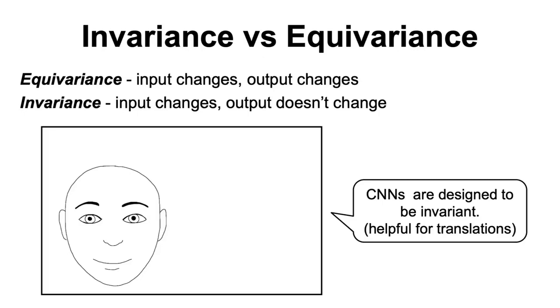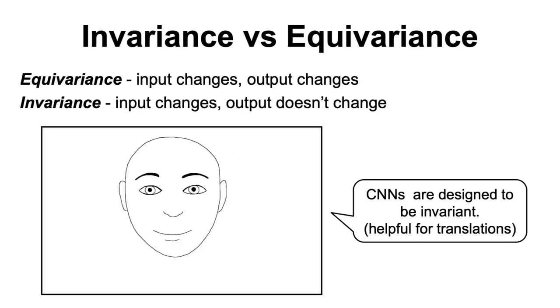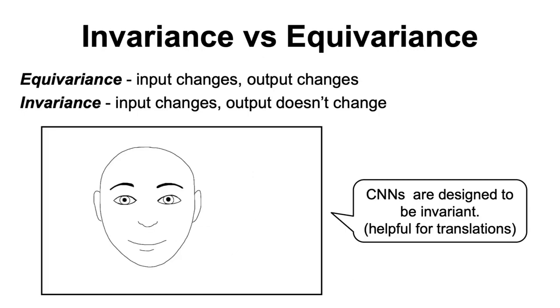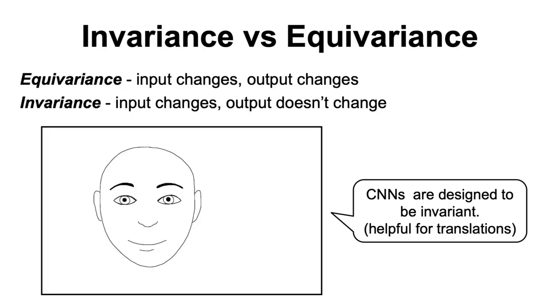And because CNNs are made to be invariant, this makes them robust against translation changes, which may sound like a good idea for models working on images at the first glance but it can backfire in unfortunate ways.